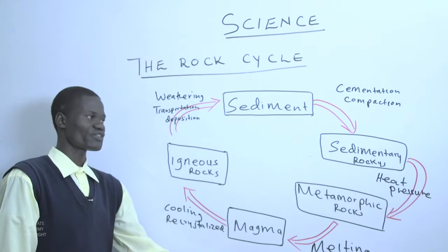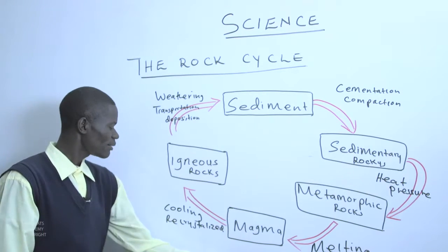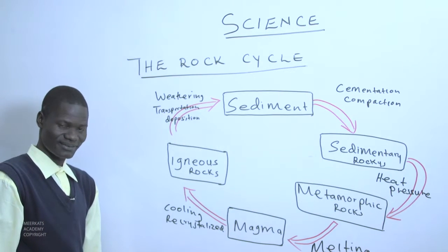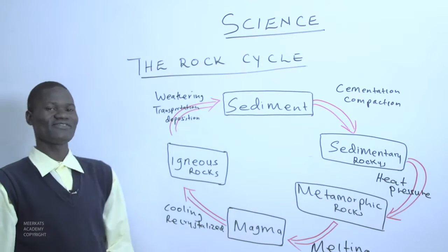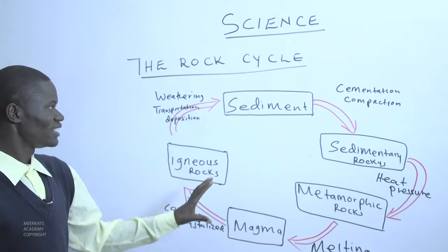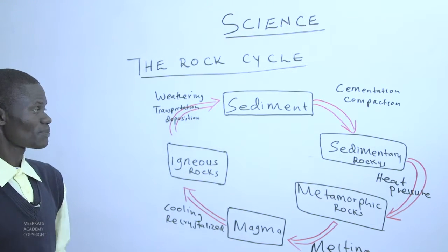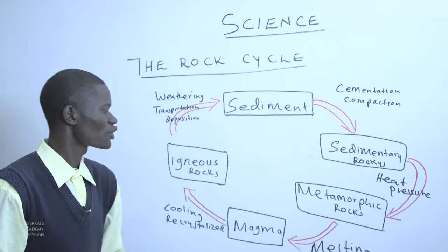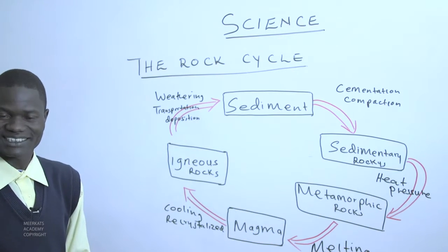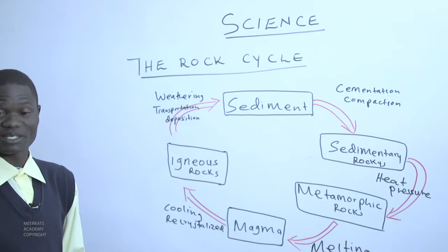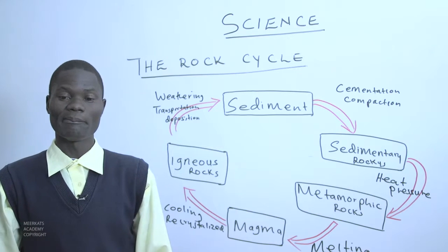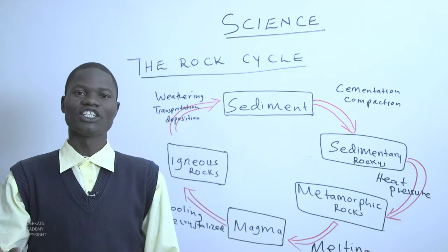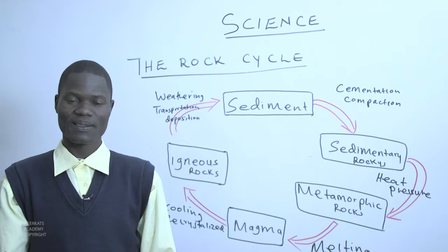As we have already seen, we started with magma. Magma is cooled and recrystallized, leading to the formation of igneous rocks. There are also various processes we must mention — at a given time, the metamorphic rocks may also be exposed on the earth's surface. If they are exposed on the earth's surface, the agents such as ice, water, and temperature will lead to metamorphic rocks being weathered down.